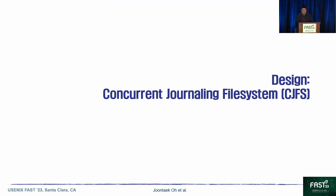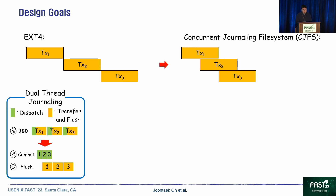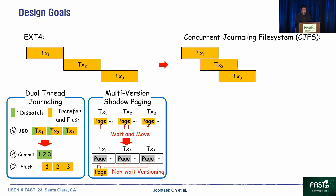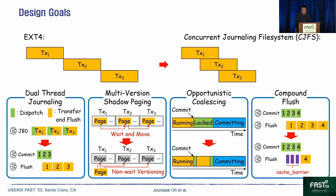To solve these two problems and achieve a scalable concurrent transaction commit, we propose a new journaling file system — the Concurrent Journaling File System, which we named CJFS. CJFS's purpose is pipelining multiple transaction commits so that multiple transactions are committed concurrently. For the concurrent transaction commit, CJFS adopts four techniques: dual-thread journaling, multi-version shadow paging, opportunistic coalescing, and compound flush.